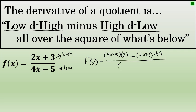All over the square of what's below — this refers to the fact that when differentiating a quotient, the denominator of the derivative is the square of the original denominator, the square of 4x minus 5 in this case. This gives us the full derivative: low d high minus high d low, all over the square of what's below.